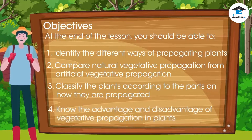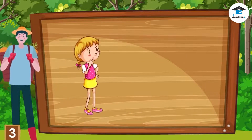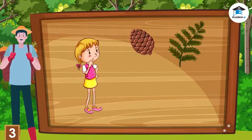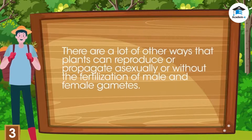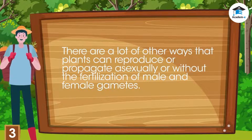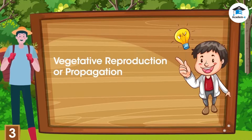Know the advantages and disadvantages of vegetative propagation in plants. Aside from flowers, plants can also reproduce through cones and spores. Reproduction through spores involves an asexual reproduction process, but aside from spores, there are a lot of other ways that plants can reproduce or propagate asexually, or without the fertilization of male and female gametes. This reproduction process is called vegetative propagation.